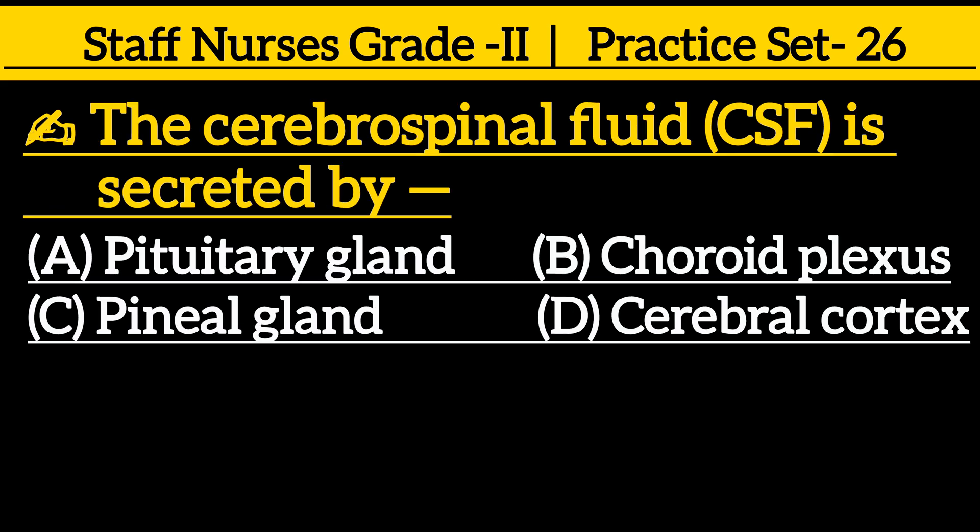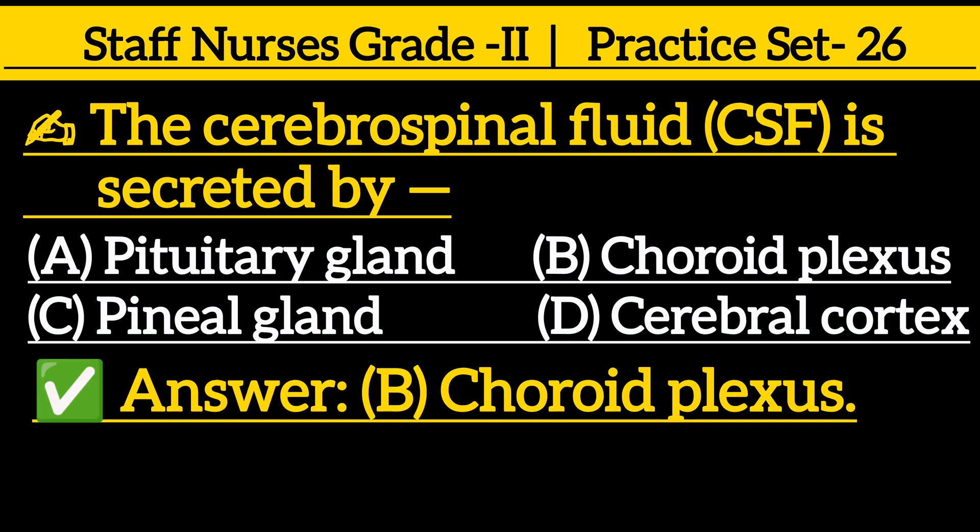Next question: the cerebrospinal fluid (CSF) is secreted by — option A: pituitary gland, option B: choroid plexus, option C: pineal gland, option D: cerebral cortex. The correct answer is option B: choroid plexus.